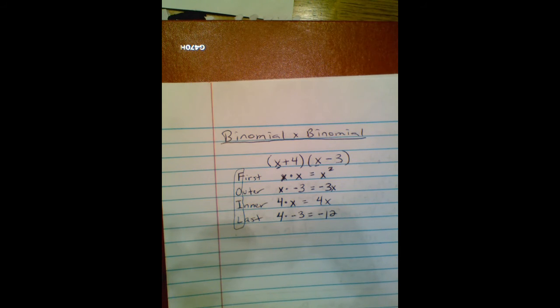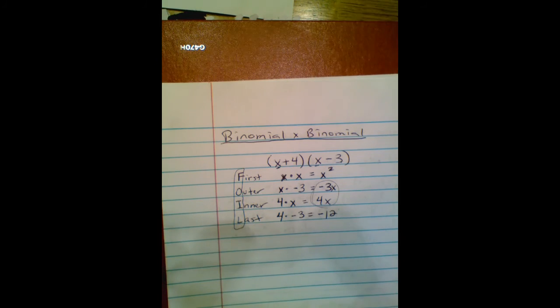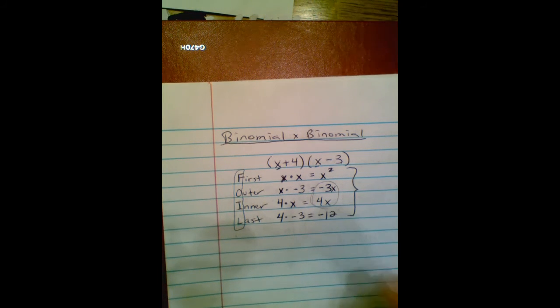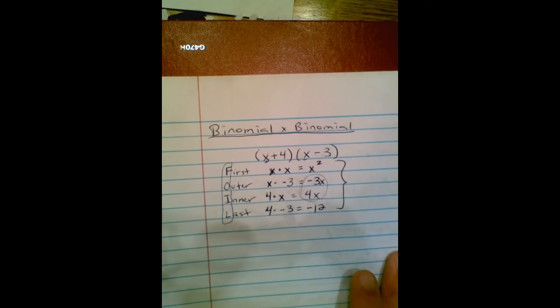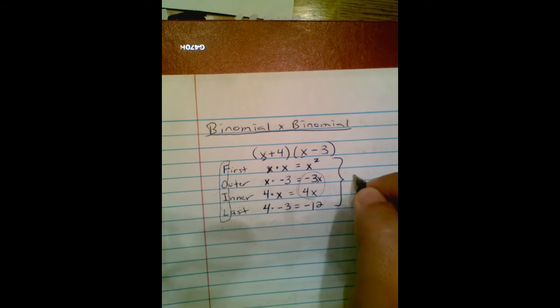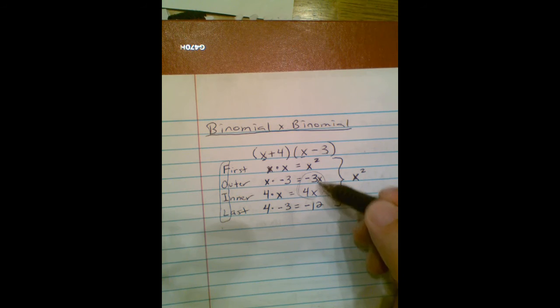Now every case doesn't have to work out like this, but the majority of the ones you're going to be doing will. So these middle two terms right here are going to be like terms. I'm going to bring all this together. To combine like terms, I've got x squared, which stays by itself. If I combine the negative 3x and the 4x...